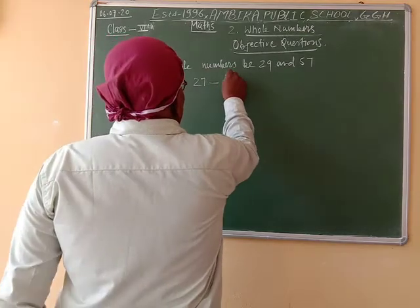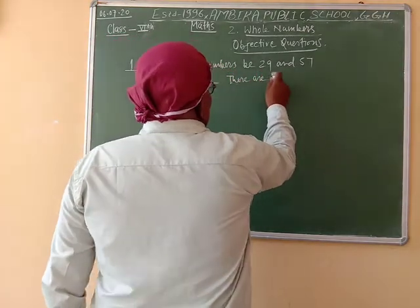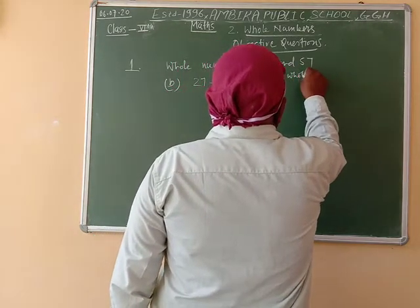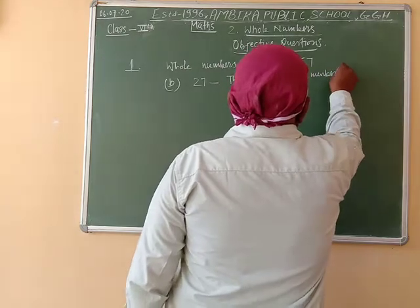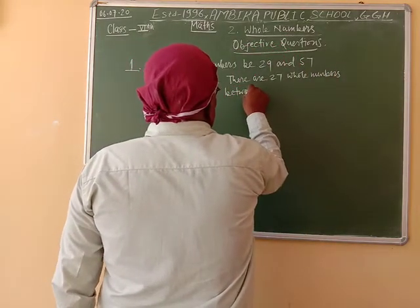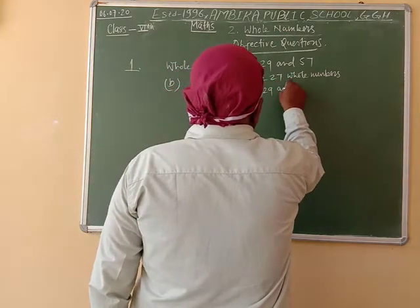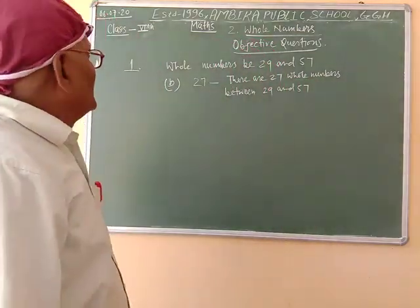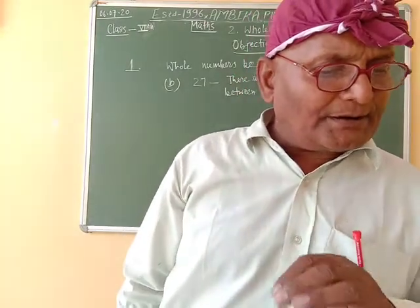There are 27 whole numbers between 29 and 57. So for question one, option B is the correct answer.